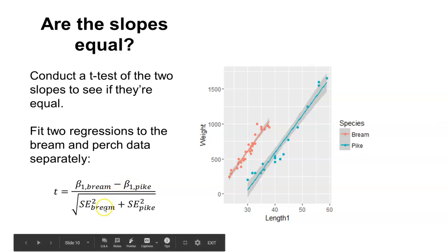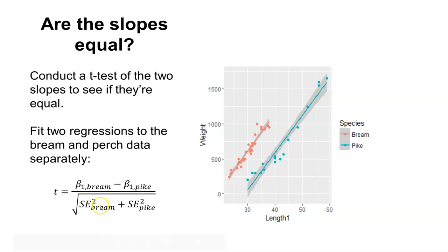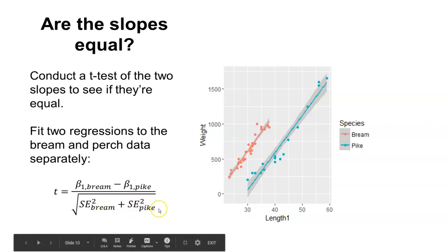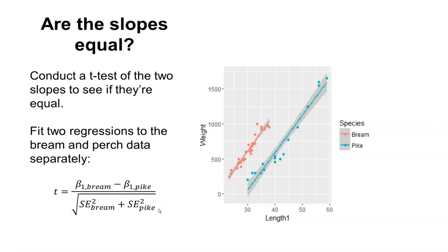And then we'll take the square root of the standard error of the bream slope squared, plus the standard error of the pike slope squared, and that will be our t-statistic. And just like we've done with all the other values and t-tests in the past, we can look at this t-statistic, compare it to a critical value of t that we find on the t-table, and then make our assessment of whether or not the slopes are equal.